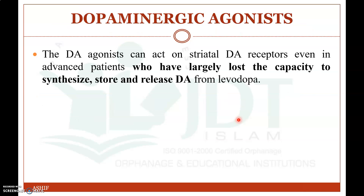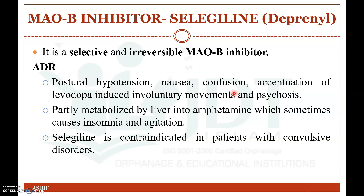Coming to dopaminergic agonists like bromocriptine. These can act on striatal dopamine receptors even in advanced patients who have largely lost the capacity to synthesize, store, and release dopamine from levodopa.